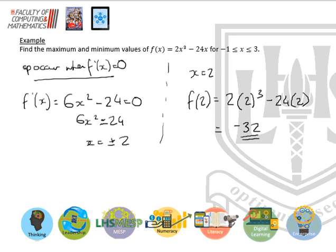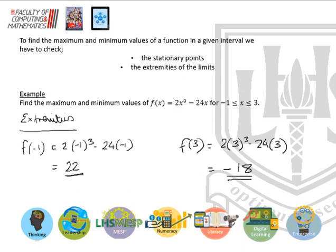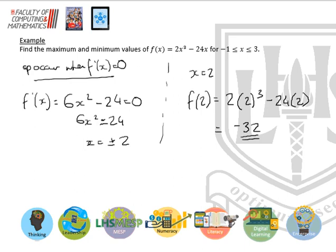So we've got three y values to compare. We've got the two from the extremities, which was 22 and minus 18.